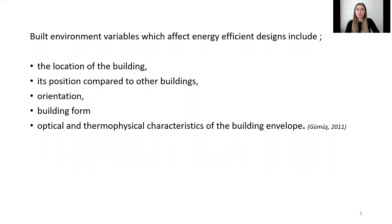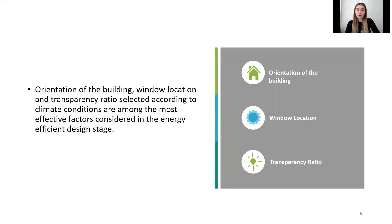If we look at the built environment variables which affect energy efficient design: the location of the building, its position compared to other buildings, orientation, building form, and optical and thermophysical characteristics of the building envelope. Internal environmental conditions, which change with different climate conditions, are affected by these design parameters. Orientation of the building, window location and transparency ratio selected according to climate conditions are among the most effective factors in the energy efficient design stage. With correct decisions taken during the design stage, interior thermal comfort conditions can be achieved with less energy load and building energy consumption can be reduced.